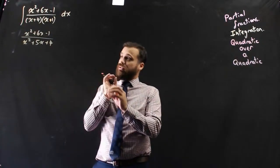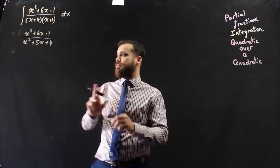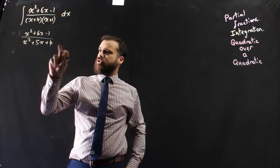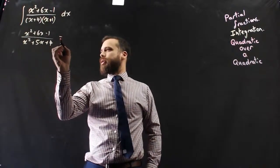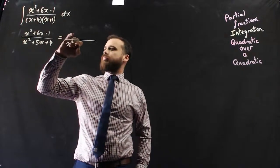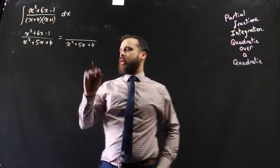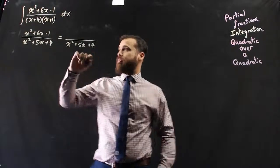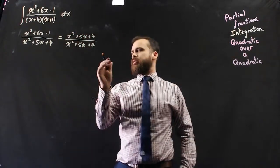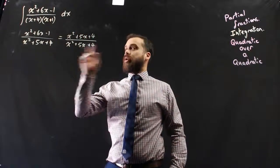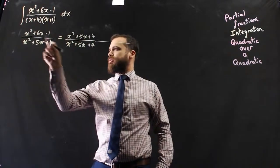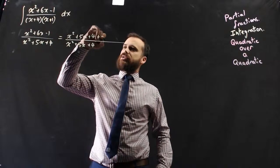Now we're going to do a bit of mathematical trickery here. We're going to make the top, or at least part of the top, look the same as the bottom. So the bottom's going to remain the same: x squared plus 5x plus 4. And then I'm going to change the top to be identical to the bottom: x squared plus 5x plus 4. But that's not equal, but I can make it equal by adding a correcting factor. So 5x to 6x, I need one more x to do that.